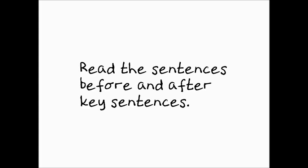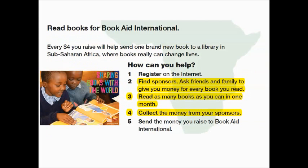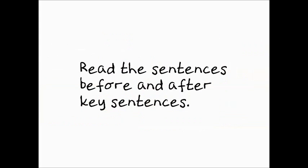The skill you're looking for here is reading the sentences before and after to see how meaning is built up through a sequence. If you just look at that one sentence in isolation, you're not going to get the answer. You need to look at the context around it — and as you can see, the context is about raising money. So the skill is: read the sentences before and after your key sentence, and look a bit broader to find your meaning.